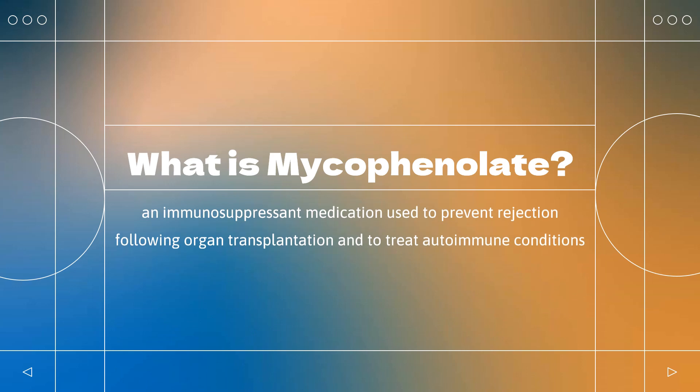Mycophenolic acid is an immunosuppressant medication used to prevent rejection following organ transplantation and to treat autoimmune conditions such as Crohn's disease and lupus. Specifically, it is used following kidney, heart, and liver transplantation. It can be given by mouth or by injection into a vein. It was approved for medical use in the United States in 1995 following the discovery of its immunosuppressive properties in the 1990s. It is available as a generic medication.